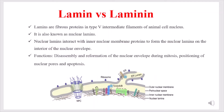Let's see about lamin. What type of protein is lamin? Where is it present? What are the functions of this protein? Lamins are fibrous proteins in the type 5 intermediate filaments of animal cell nucleus. This lamin protein is present in the animal cell nucleus — it is a nuclear protein. It is not present in microorganisms or plant cells. It is a fibrous protein coming under type 5 intermediate filaments.